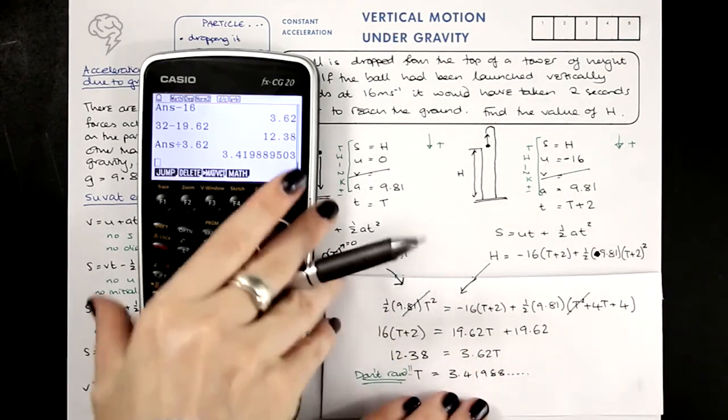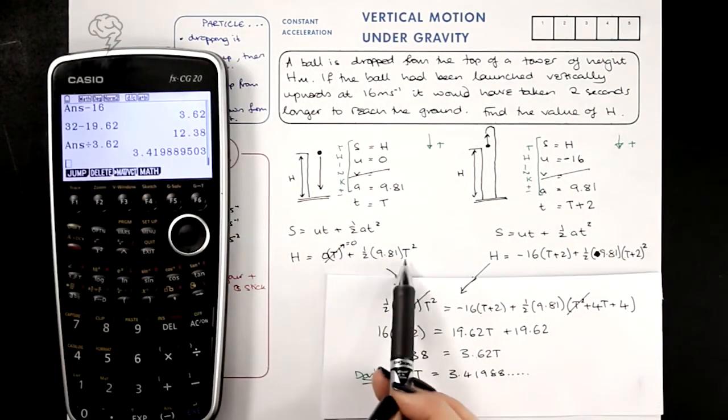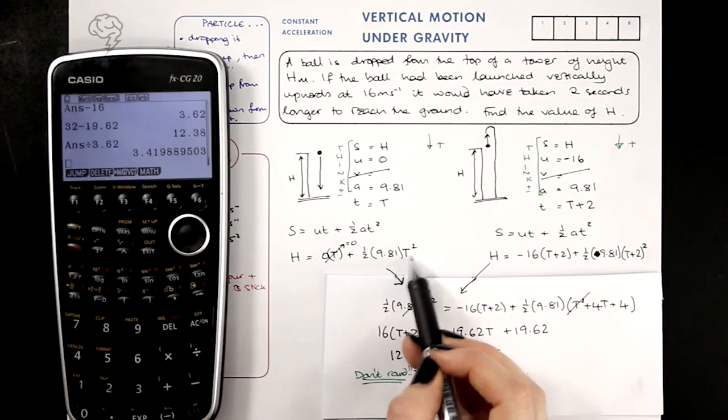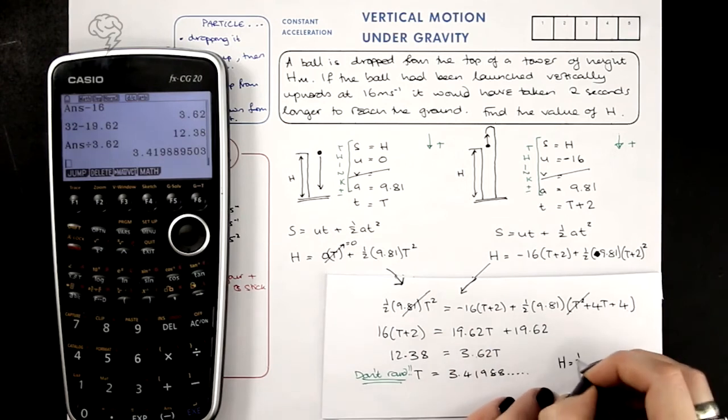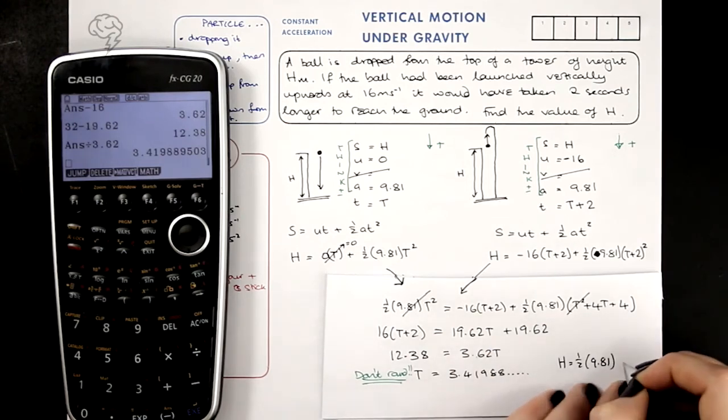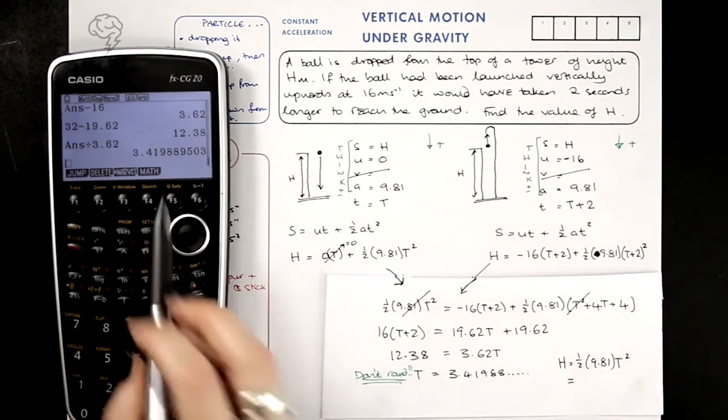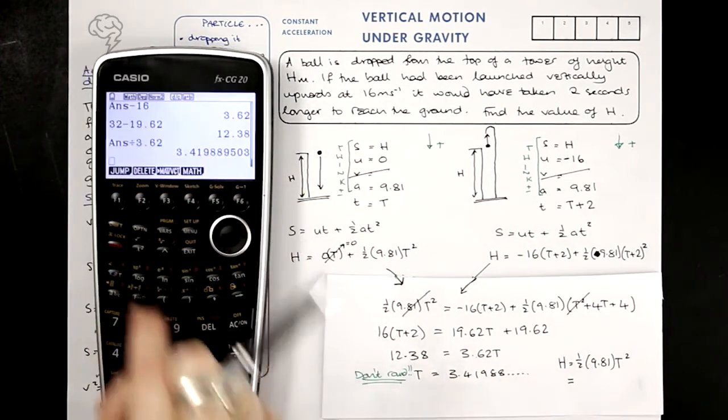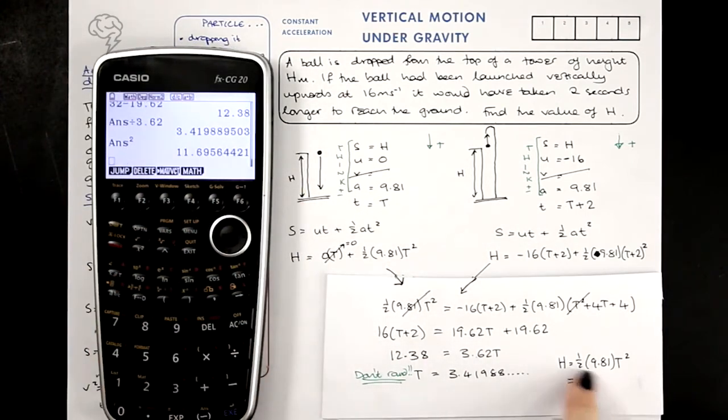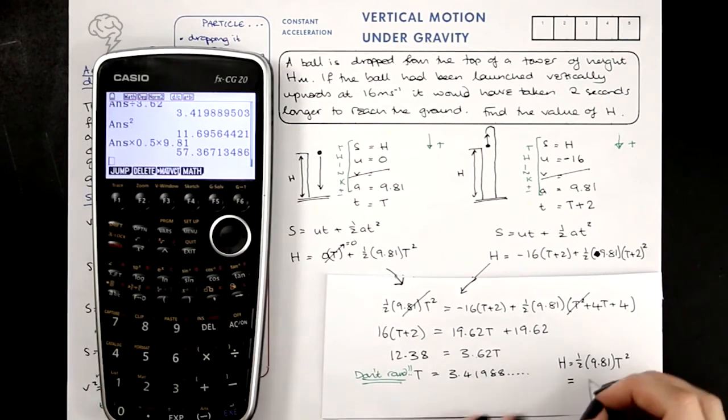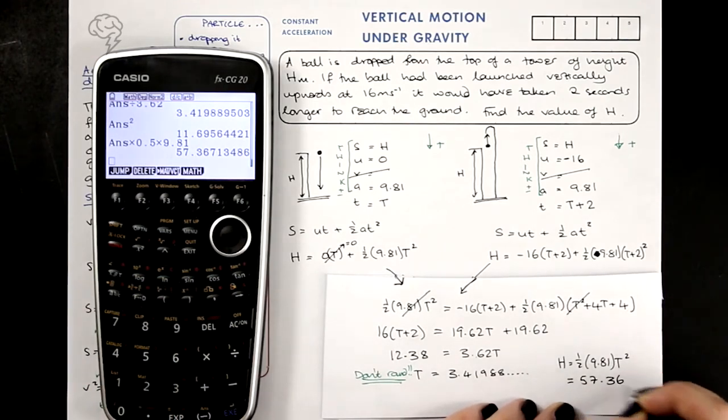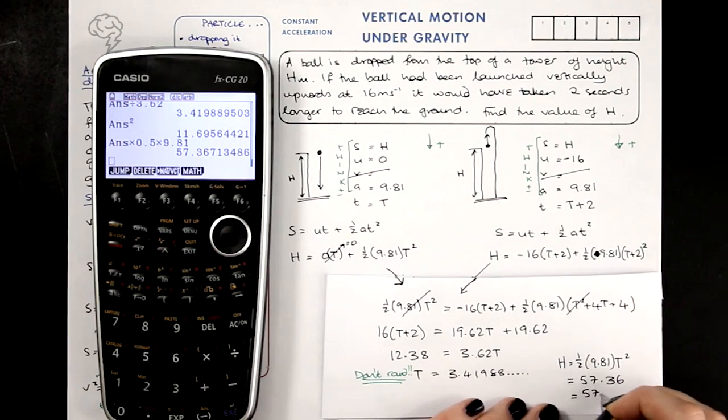Now what I actually wanted was H, and this equation here links H with T, so I need to square it and times it by half of 9.81. And I've got that whole value in my calculator there, I'm going to square it, that's T squared, times half of 9.81, 57.36 meters, or to three significant figures, 57.4 meters.